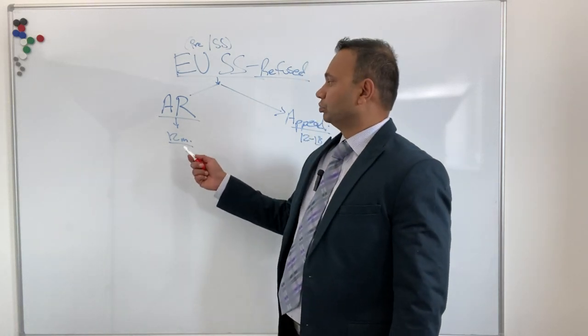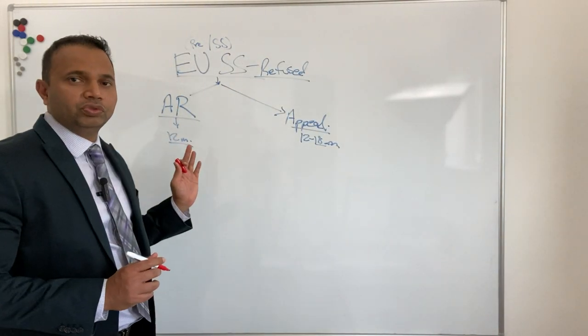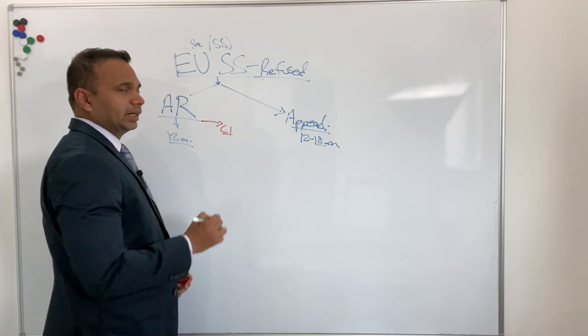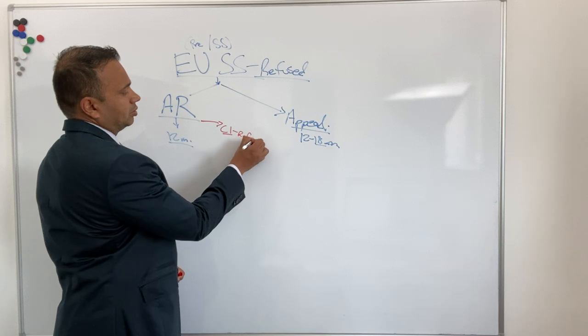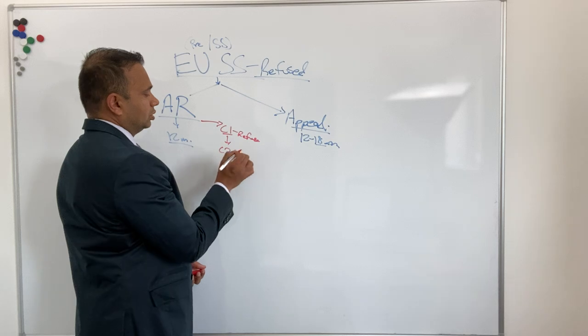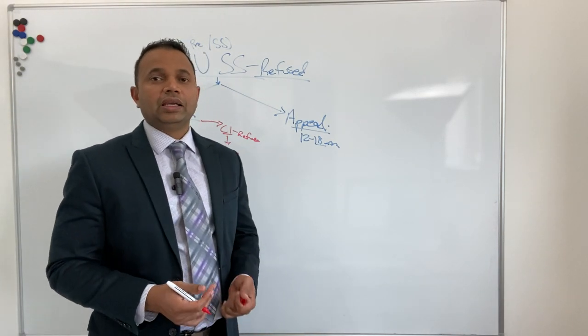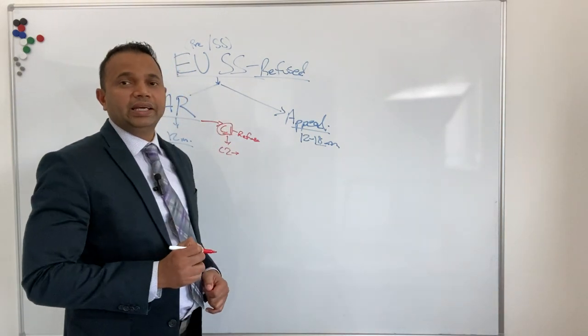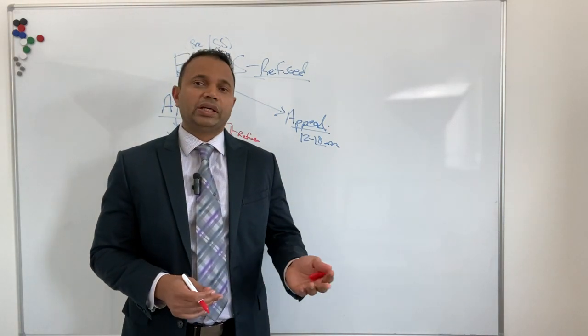So what does administrative review mean? If caseworker one has checked your application and refused it, someone in the same department, caseworker two, will check the documents and application and try to see if caseworker one has made any error. It will usually be an administrative error.